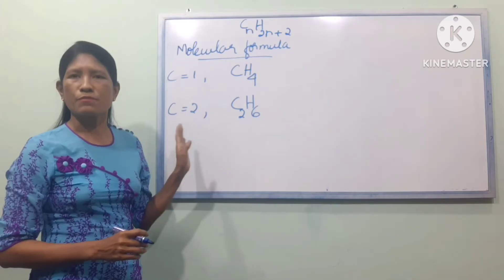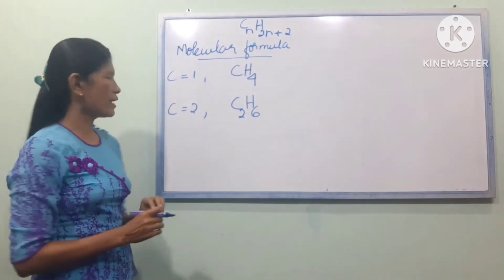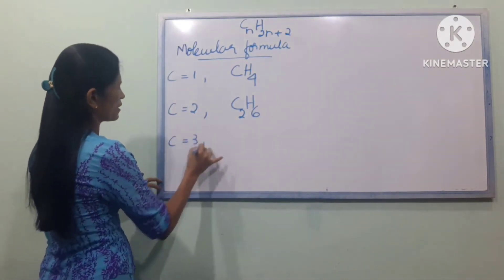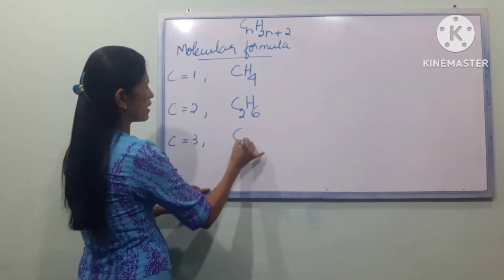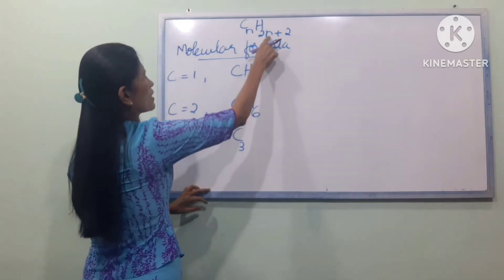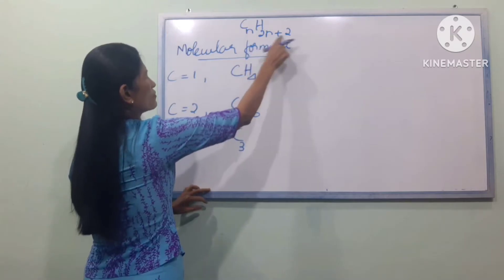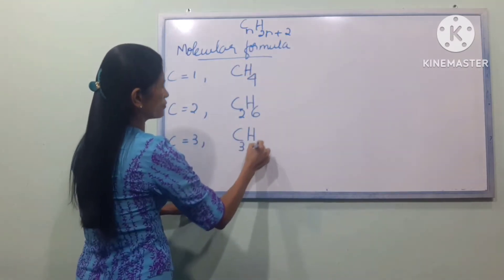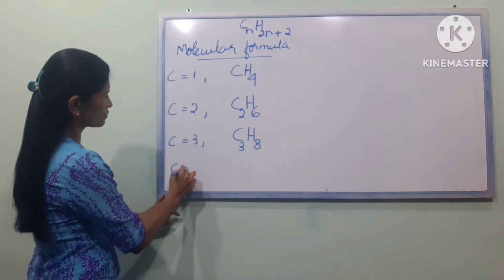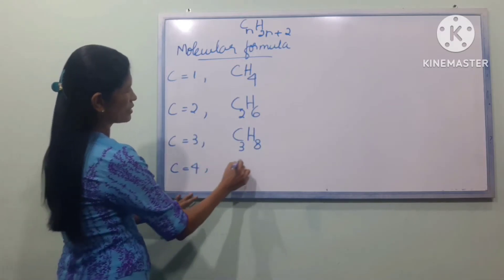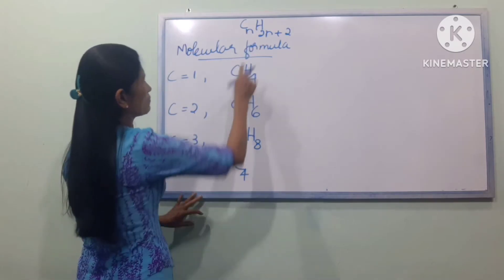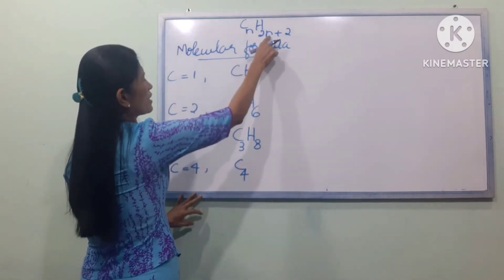CnH2n+2. C equals 3 is C equal to 3. The C equals 3 gives 4 hydrogens and can be done. C equals 4. If C is N, then C4 can be done with 4.